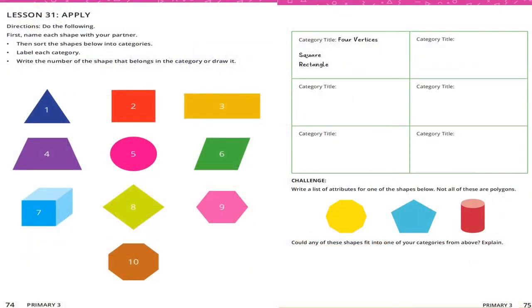Now let's apply and name our shapes. The first shape is a triangle. The second is a square. The third is a rectangle. The fourth is a trapezium — also called trapezoid last year; both are correct, so it can be called trapezium or trapezoid. The next one is a circle.